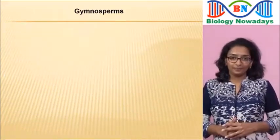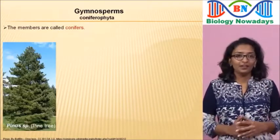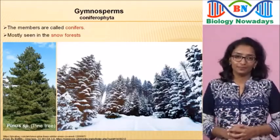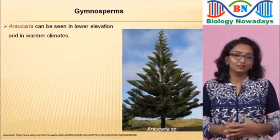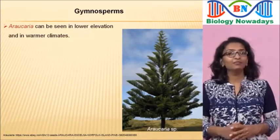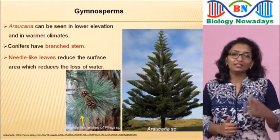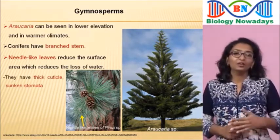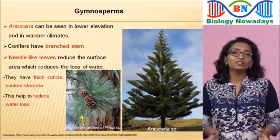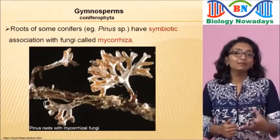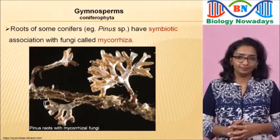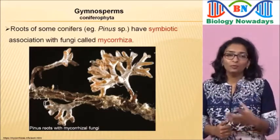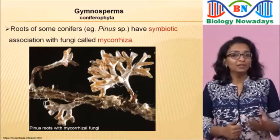The third class is Coniferophyta — its members are commonly called conifers. Species of conifers can be found in almost all parts of the world, but they are mostly seen in snow forests. A conifer called Araucaria can be seen at lower elevations in warmer climates. Conifers have a branched stem, and their needle-like leaves reduce surface area, limiting water loss. They are covered with a thick waxy cuticle and have sunken stomata. Roots of some conifers, for example Pinus, have a symbiotic association with fungi called mycorrhizae, which absorb water and mineral nutrients improving the tree's mineral absorption.